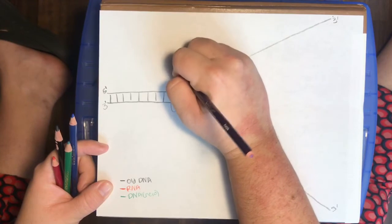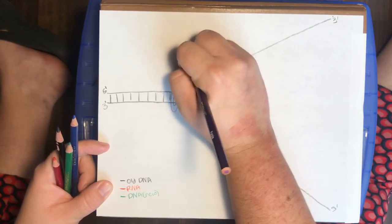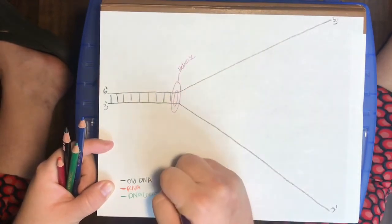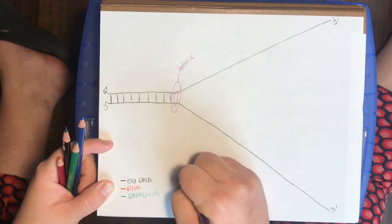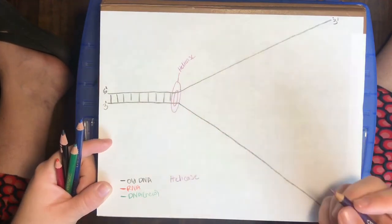We're going to call this helicase. And we're going to list that here with our list of proteins and structures. So proteins will be labeled, or enzymes will be in purple.